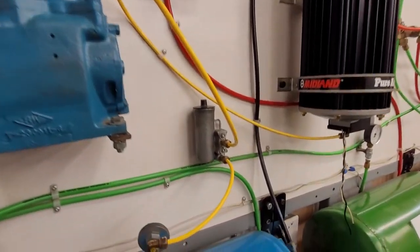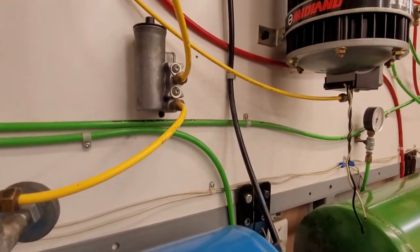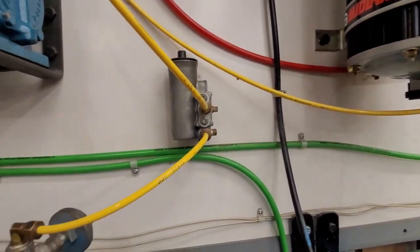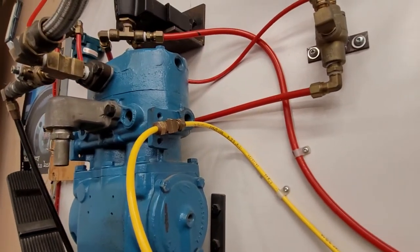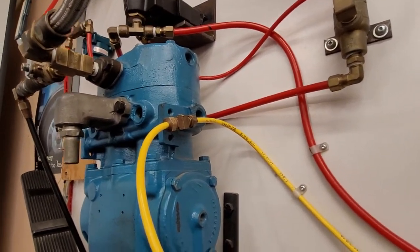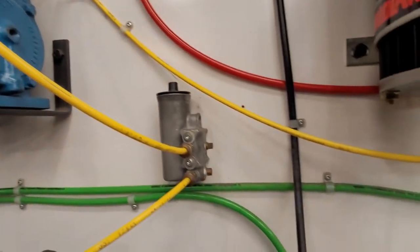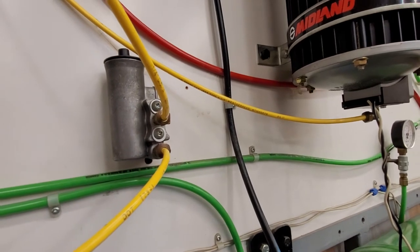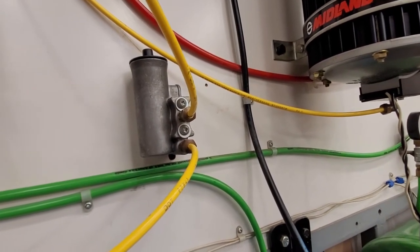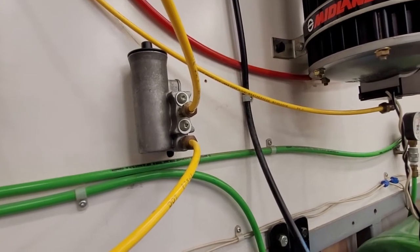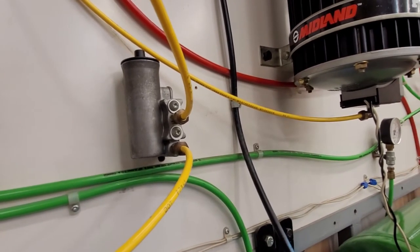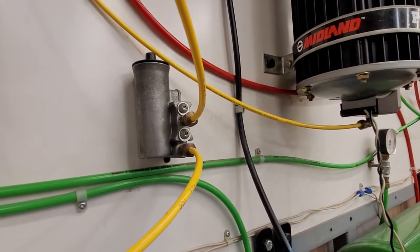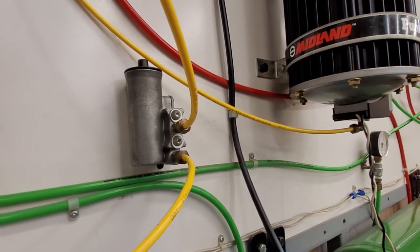Next we have a governor. The governor is usually bolted to the side of the compressor, where those two yellow lines run to. The governor is basically a device that governs the pressure in the system. It puts the compressor in the loaded and unloaded cycle, so it tells the compressor when to make air and when not to make air.